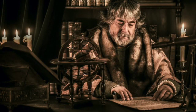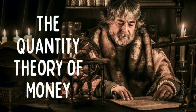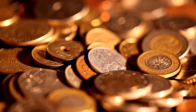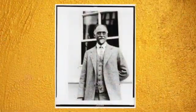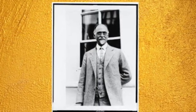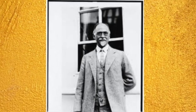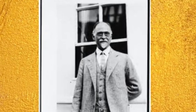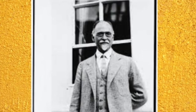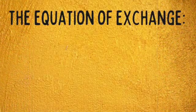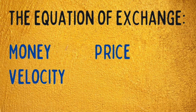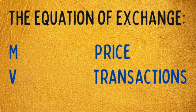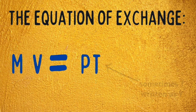Of all the theories in economics, the quantity theory of money is one of the oldest. There are a number of different versions, yet for most people it is associated with the American economist Irving Fisher, who in 1911 restated and developed the theory. It was his conception of the equation of exchange — MV equals PT — that would become so influential.